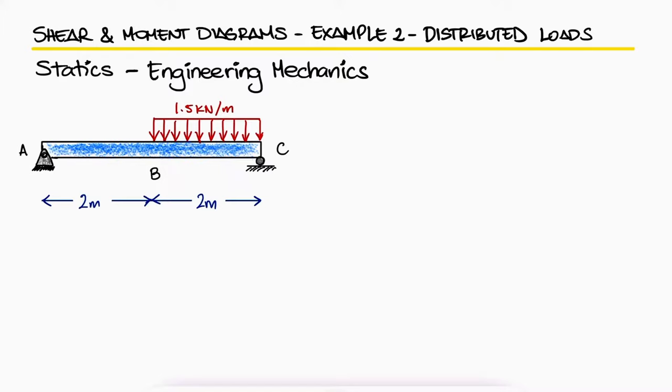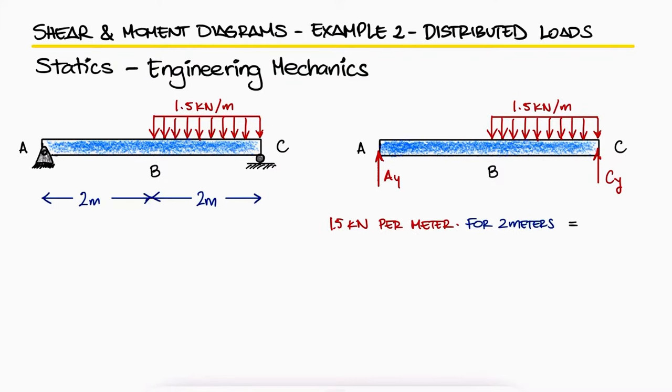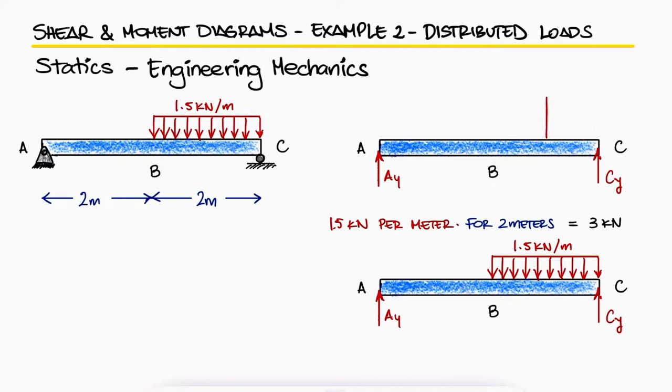Just like in the previous example, the first thing we need to find are the reaction forces at A and C. With a free body diagram, we see that we can substitute the distributed load that adds up to 3 kN by a point load of 3 kN right between B and C.